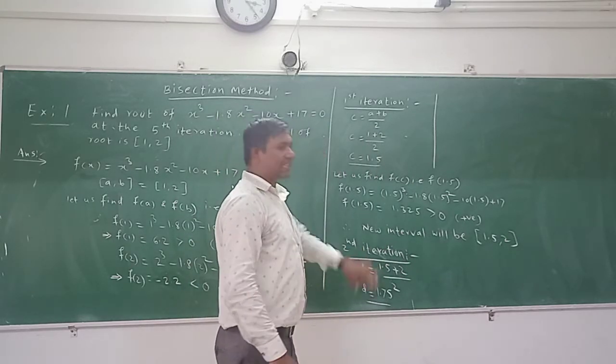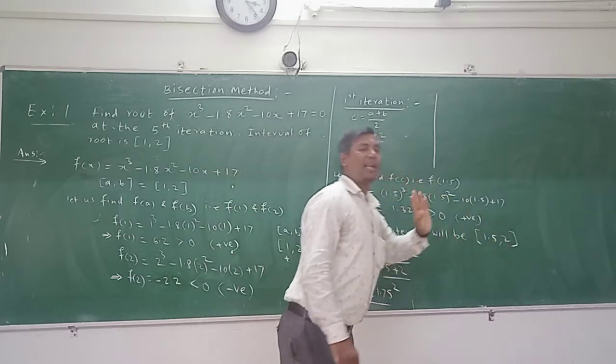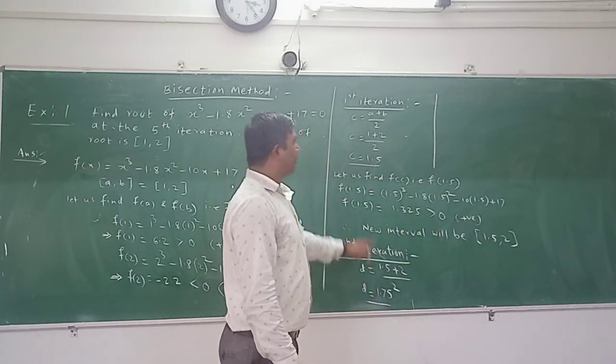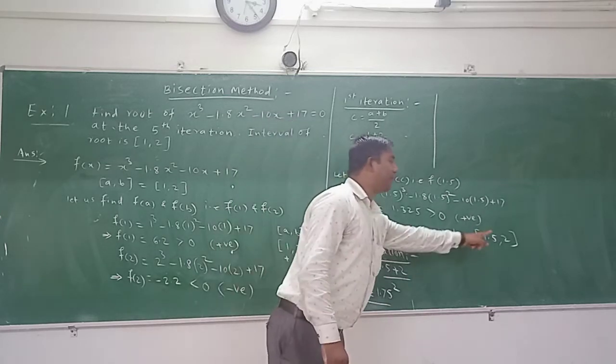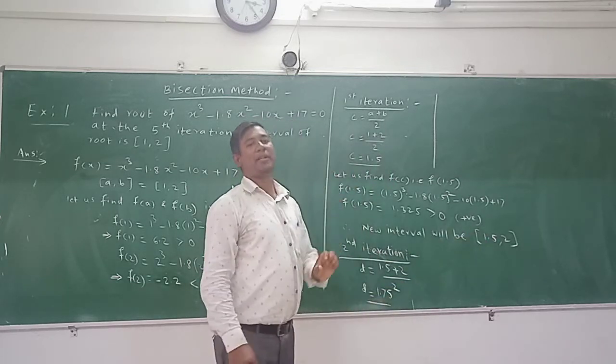So at the end of second iteration you will use these two values. So your d value after c you will find d. That will be 1.5 plus 2 upon 2, so it will be 1.75.